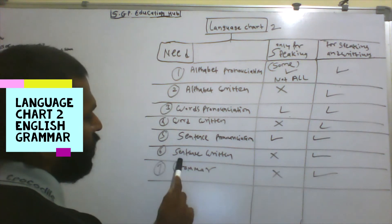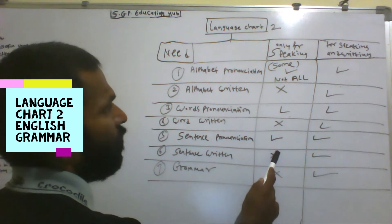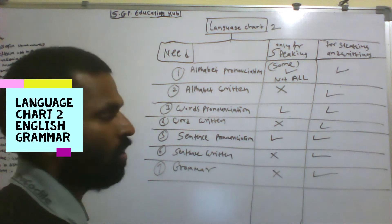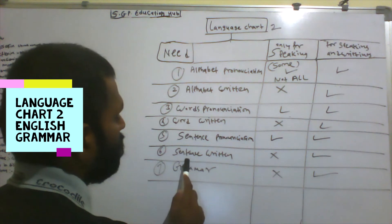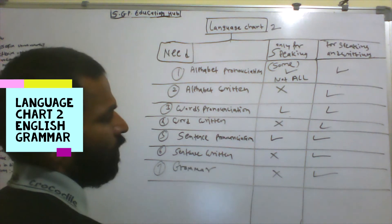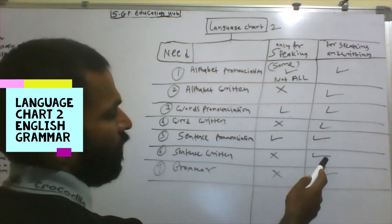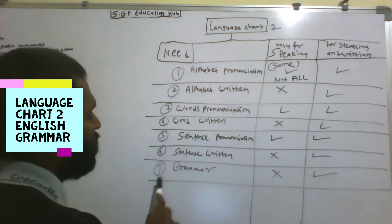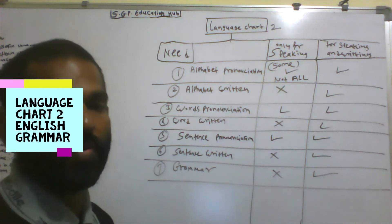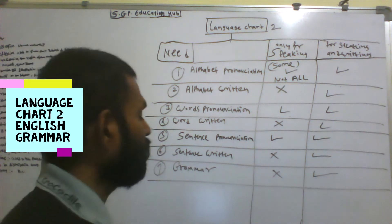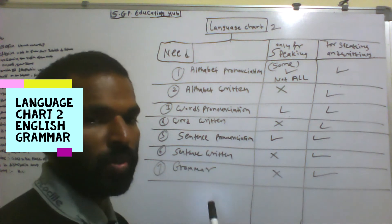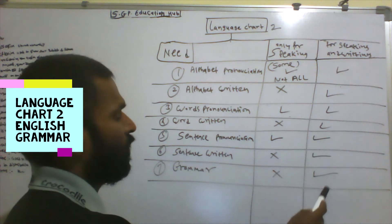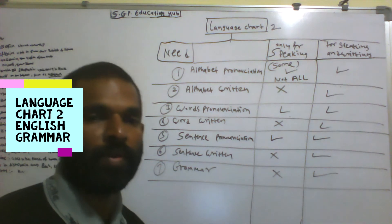The sixth point is sentence written. If you want to only speak, there is no need to write sentences. For speaking and writing combined, sentence writing is needed. The seventh point is grammar. Grammar is the highest peak of any language. For speaking only, there is no need for grammar. For writing and speaking combined, grammar is needed.